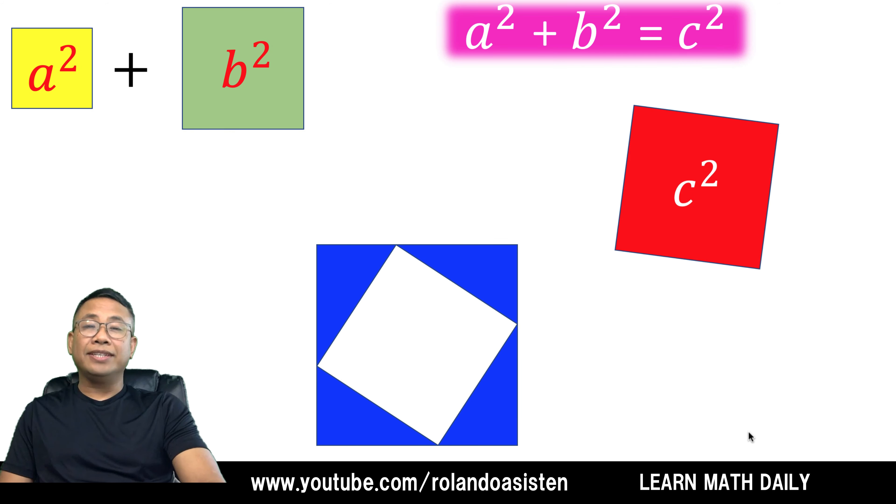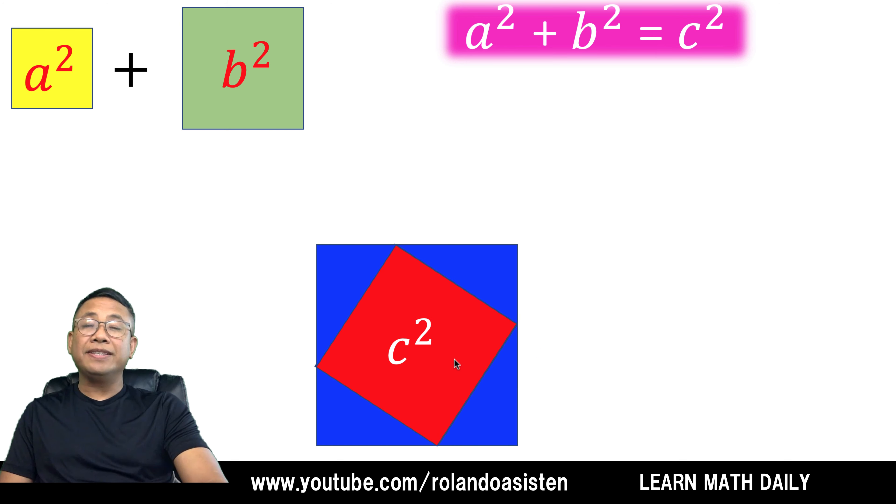So let's fit in now C squared this way. Obviously, C squared fits perfectly inside the hole because we know that the length of the side here is C. It's also C here, and our square is of area C squared. It's a perfect fit.